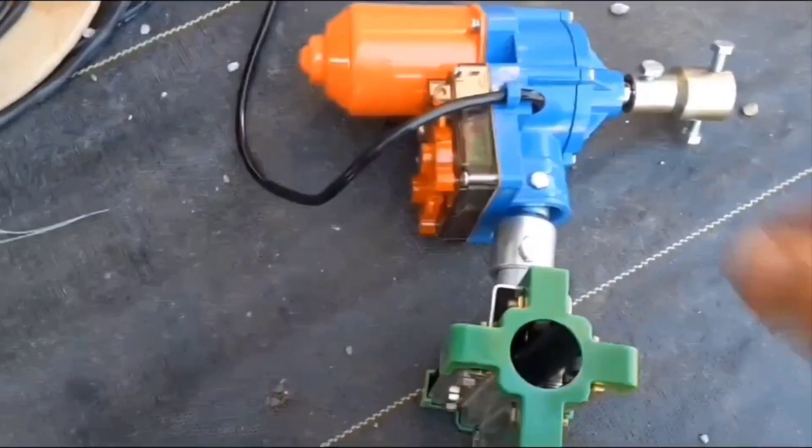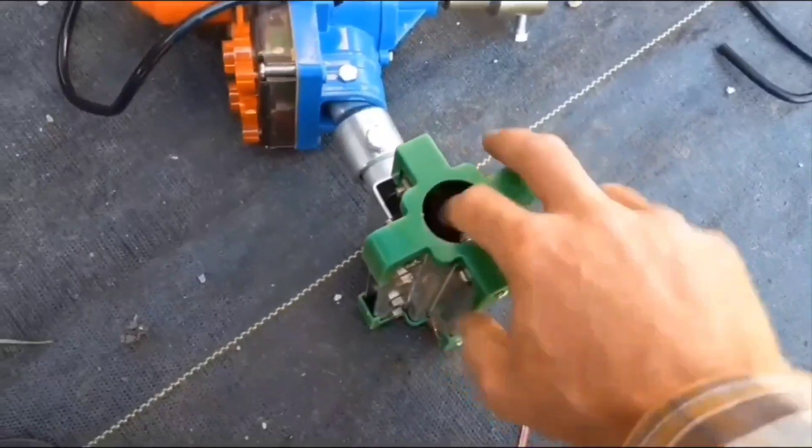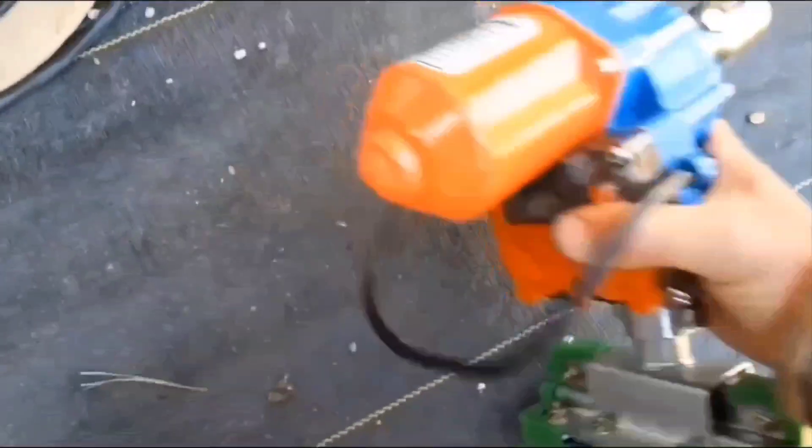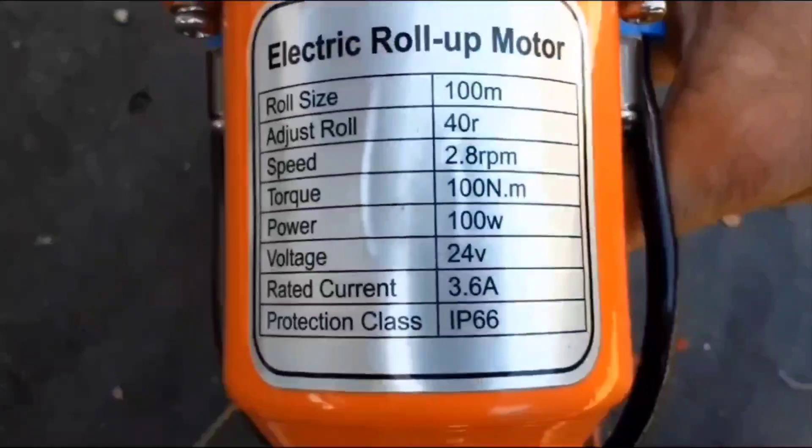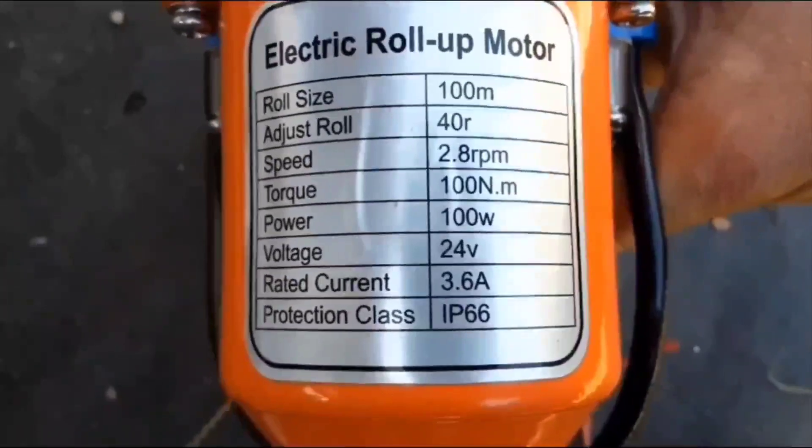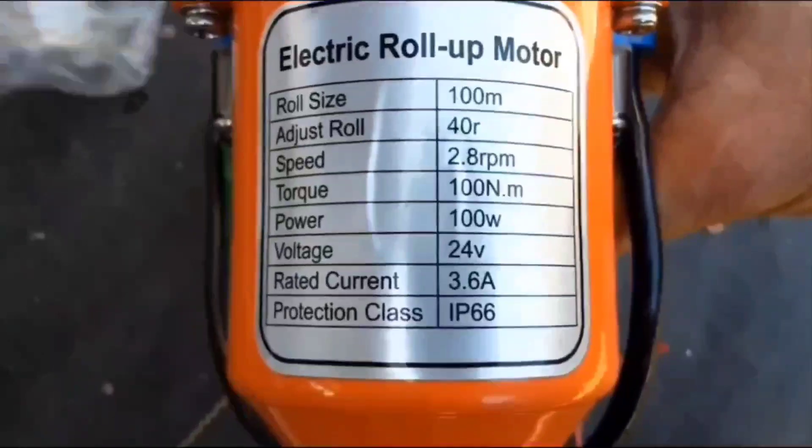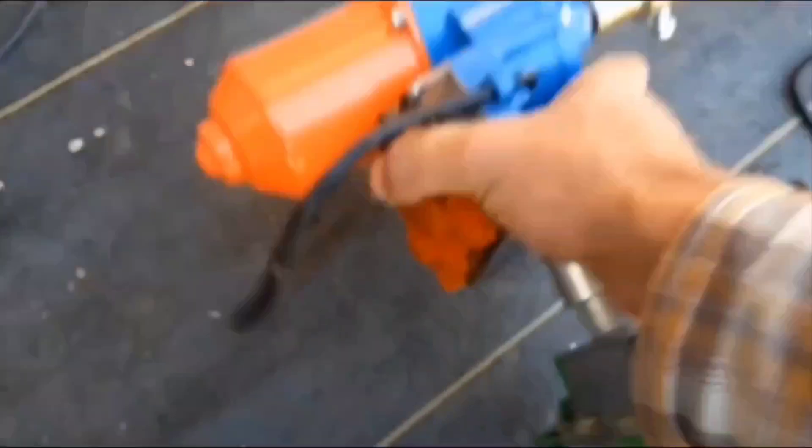This is the motor I'm using. Got it off of Amazon. It's got a trolley. Fits on a three-quarter inch piece of conduit. It is a roll-up motor and all that good stuff. The one thing to note is that the power is 100 watt and the voltage is 24 volts. So that determines the transformer you have to get for it.